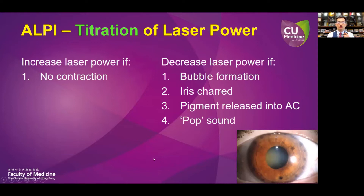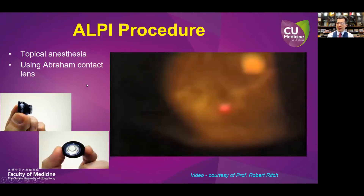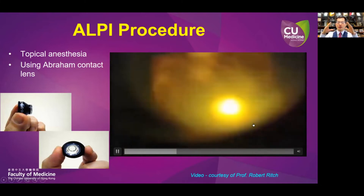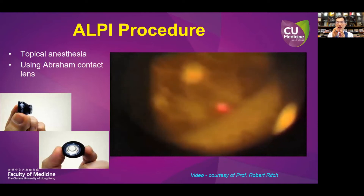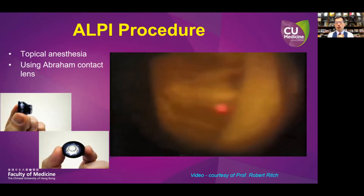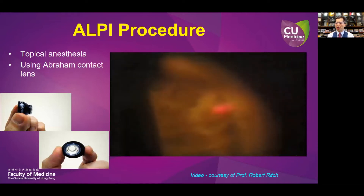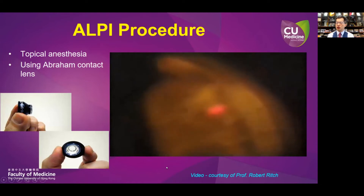During the procedure, you would also have to titrate the laser power against what you see. If there is no contraction, you have to increase the laser power, whereas if you see bubble formation, iris charring, pigment release, or if you hear a pop sound, then you may have to decrease your laser power. We normally use topical anesthesia with an Abraham contact lens. As soon as the laser spot is applied, there is contraction of the iris towards the laser spot, which thins the peripheral iris as well as pulls the positional closure away from the drainage angle, widening and opening the positionally closed drainage angle. This is a very effective and safe procedure for this purpose.